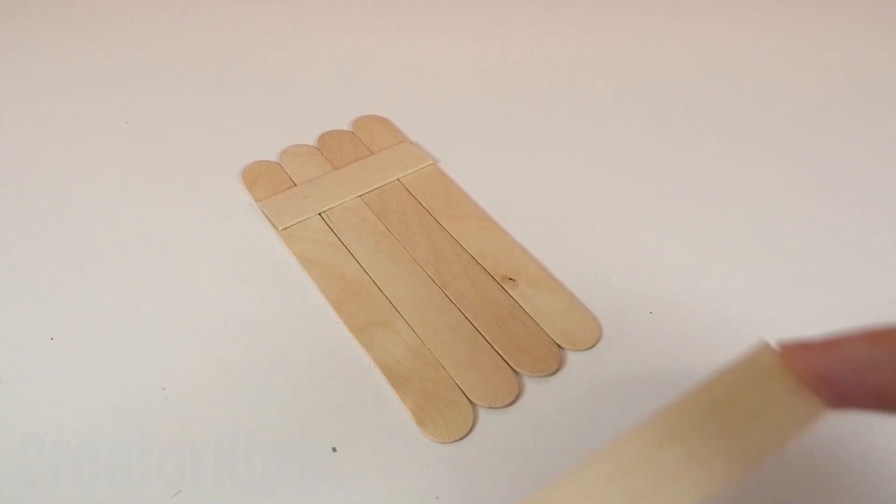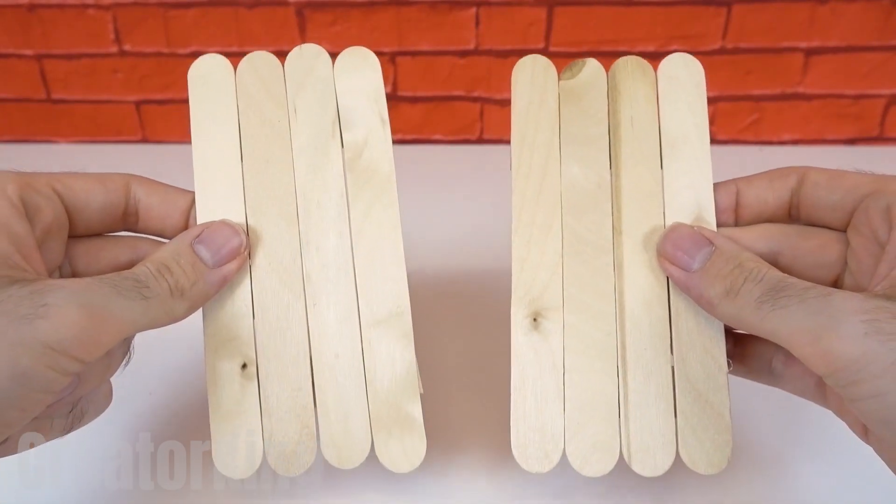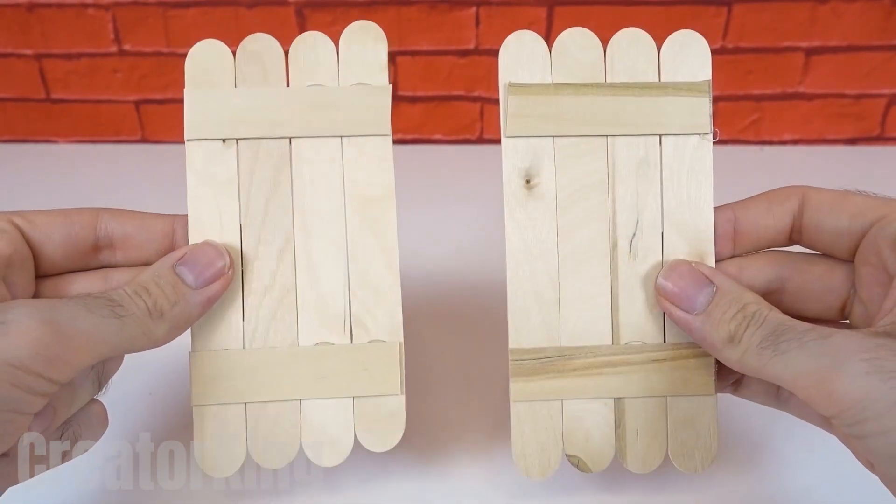That's how wooden fences are made. Now you can fence off half your room if you share it with your brother. Cut the rounded edges off at the ends of the fences.